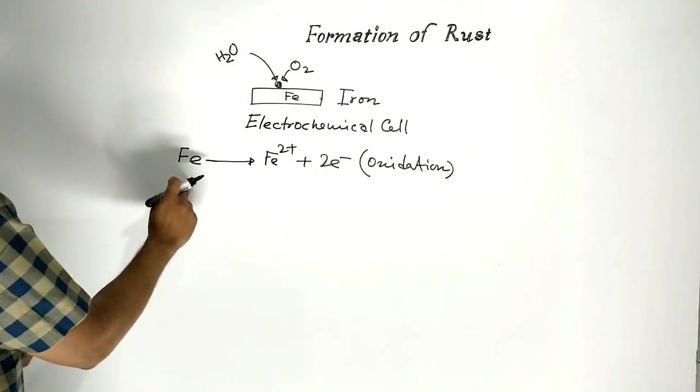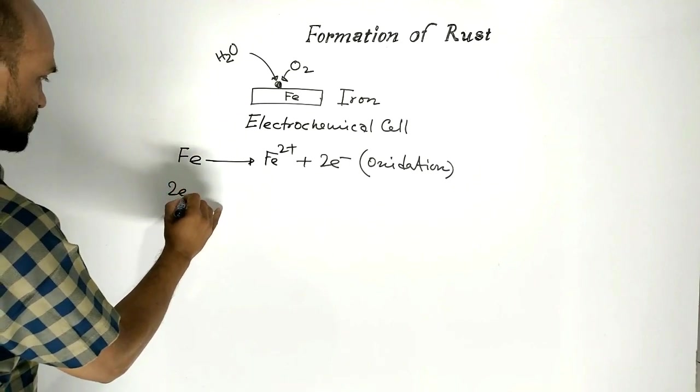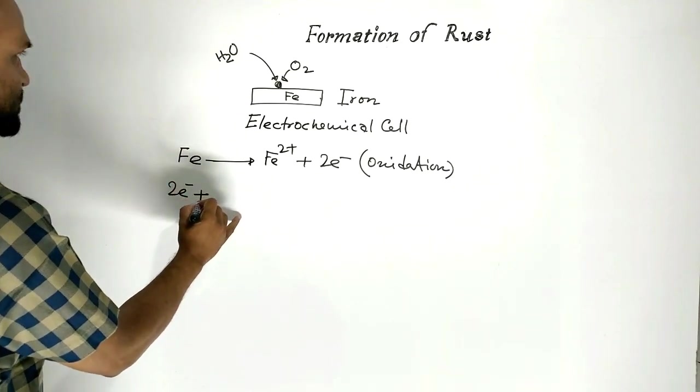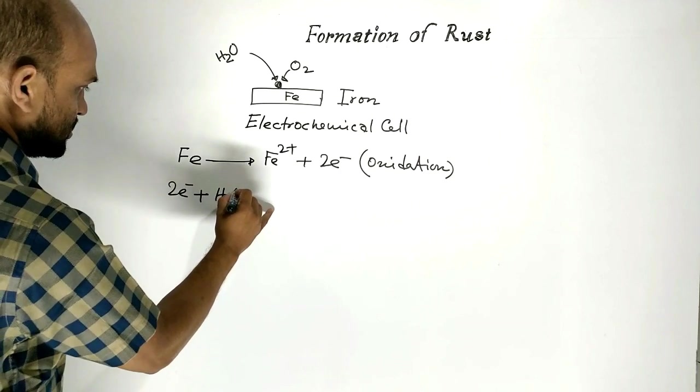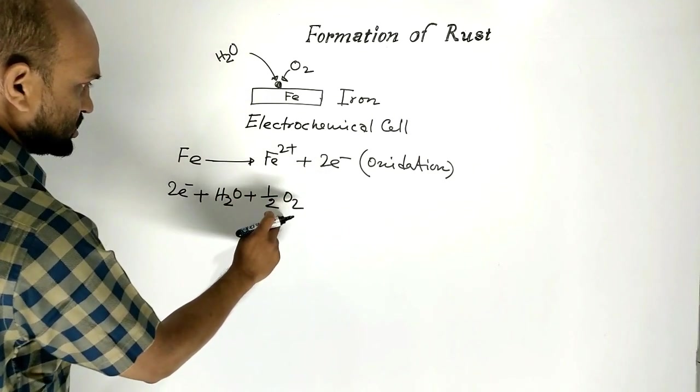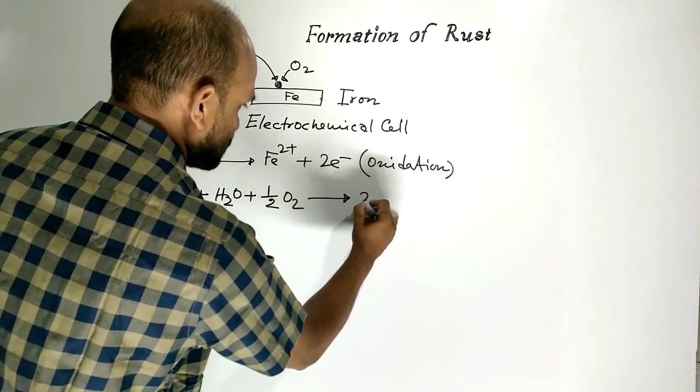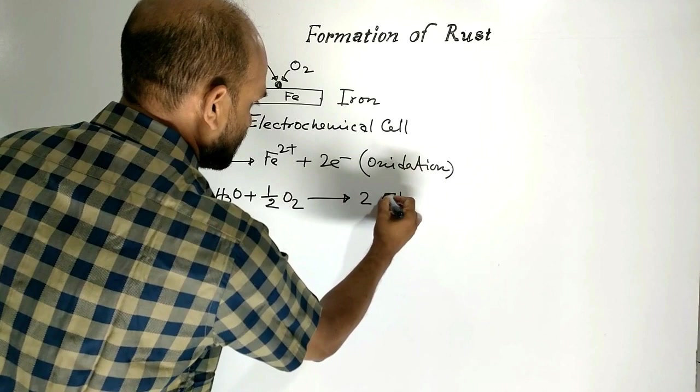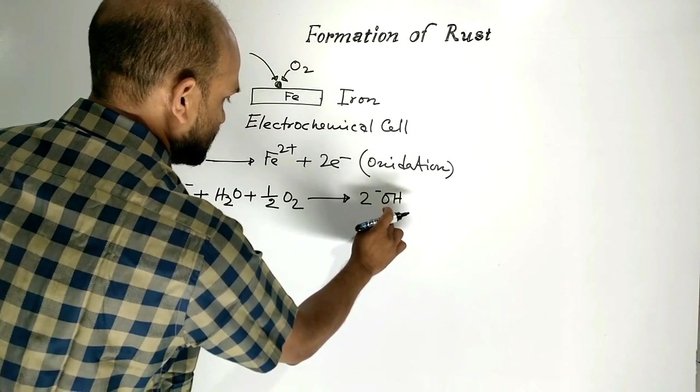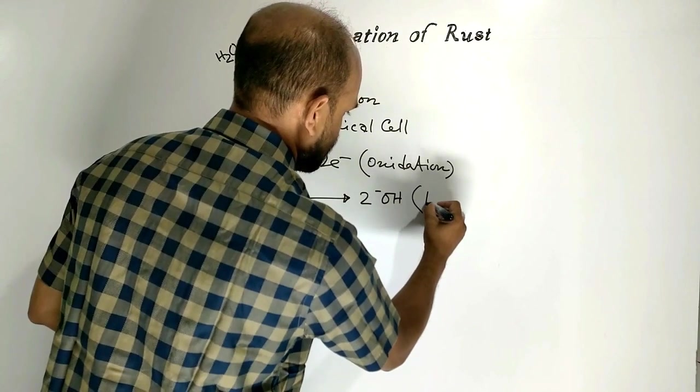And these two electrons are accepted by water and half moles of oxygen. As a result, hydroxide ion is formed. Acceptance of electrons occurs, which is known as reduction.